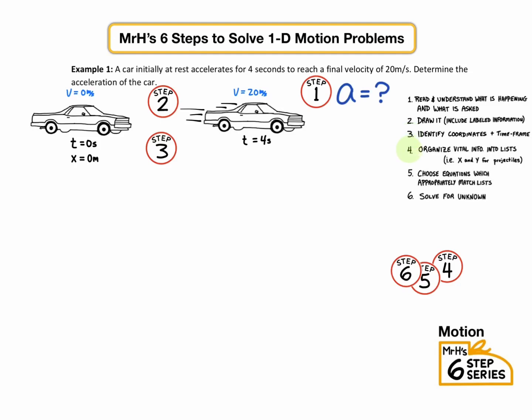Step four, we're going to organize our vital information into lists. We'll start with the question, A equals question mark, and then they also gave us that it was initially at rest. So we'll add VI equals zero. They said we accelerate for four seconds. We'll add time equals four seconds, and the final velocity of 20 meters per second. We'll include that too.